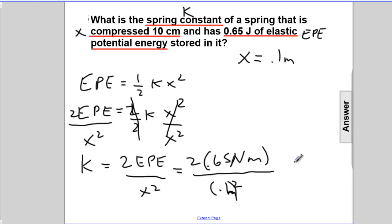So the units when we work this out will be Newton meters per meters squared. We'll cancel meters and cancel meters, so we end up with newtons per meter, which are the units for K, the spring constant.